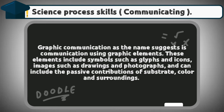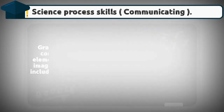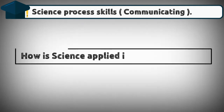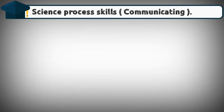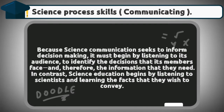Graphic communication — as the name suggests — is communication using graphic elements. These elements include symbols such as glyphs and icons, images such as drawings and photographs, and can include the passive contributions of substrate, color, and surroundings.